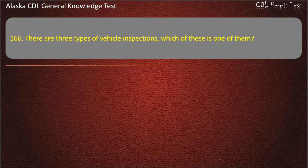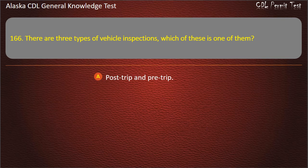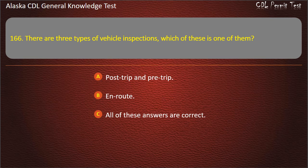Question 166. There are 3 types of vehicle inspections. Which of these is one of them? Post-trip and pre-trip, en route, or all of these answers are correct. Answer: All of these answers are correct.